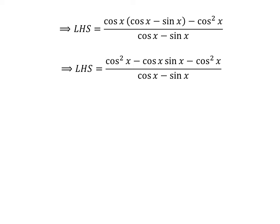Cancelling cosine squared of x and minus cosine squared of x gives us the left hand side of the identity equal to minus cosine of x times sine of x upon cosine of x minus sine of x.